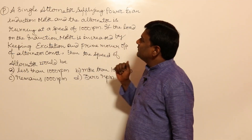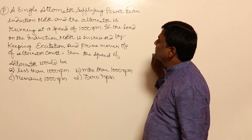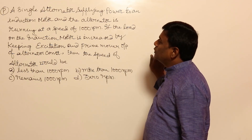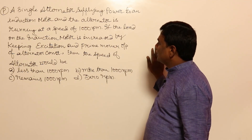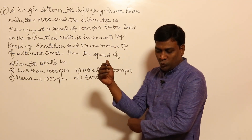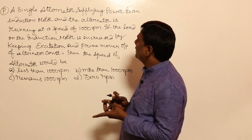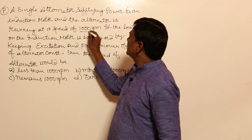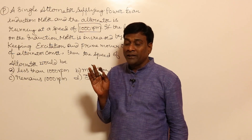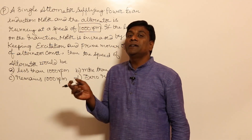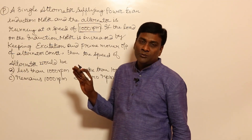A single alternator is supplying power to an induction motor, and the alternator is running at a speed of 1000 rpm. If the load on the induction motor is increased by keeping excitation and prime mover input of the alternator constant, then the speed of the alternator would be? The alternator is running at 1000 rpm, and there is no mechanical coupling — the induction motor is not rotating the alternator; rather, a separate prime mover is rotating it.